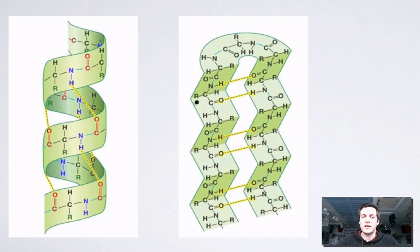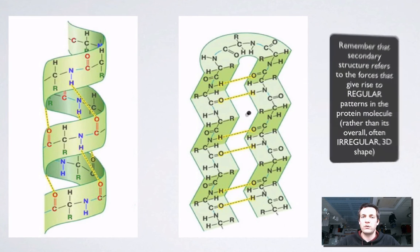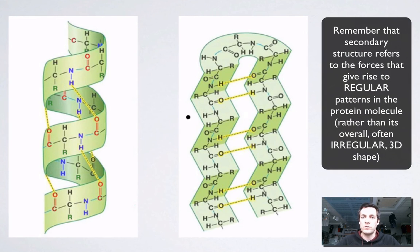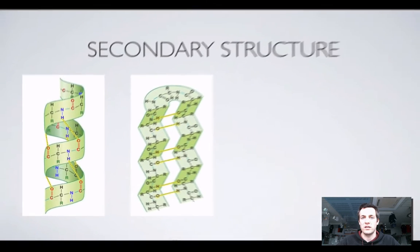So this secondary structure, this twisting or folding of the chain caused by the hydrogen bonding between amide groups along the chain, that is what the secondary structure is.